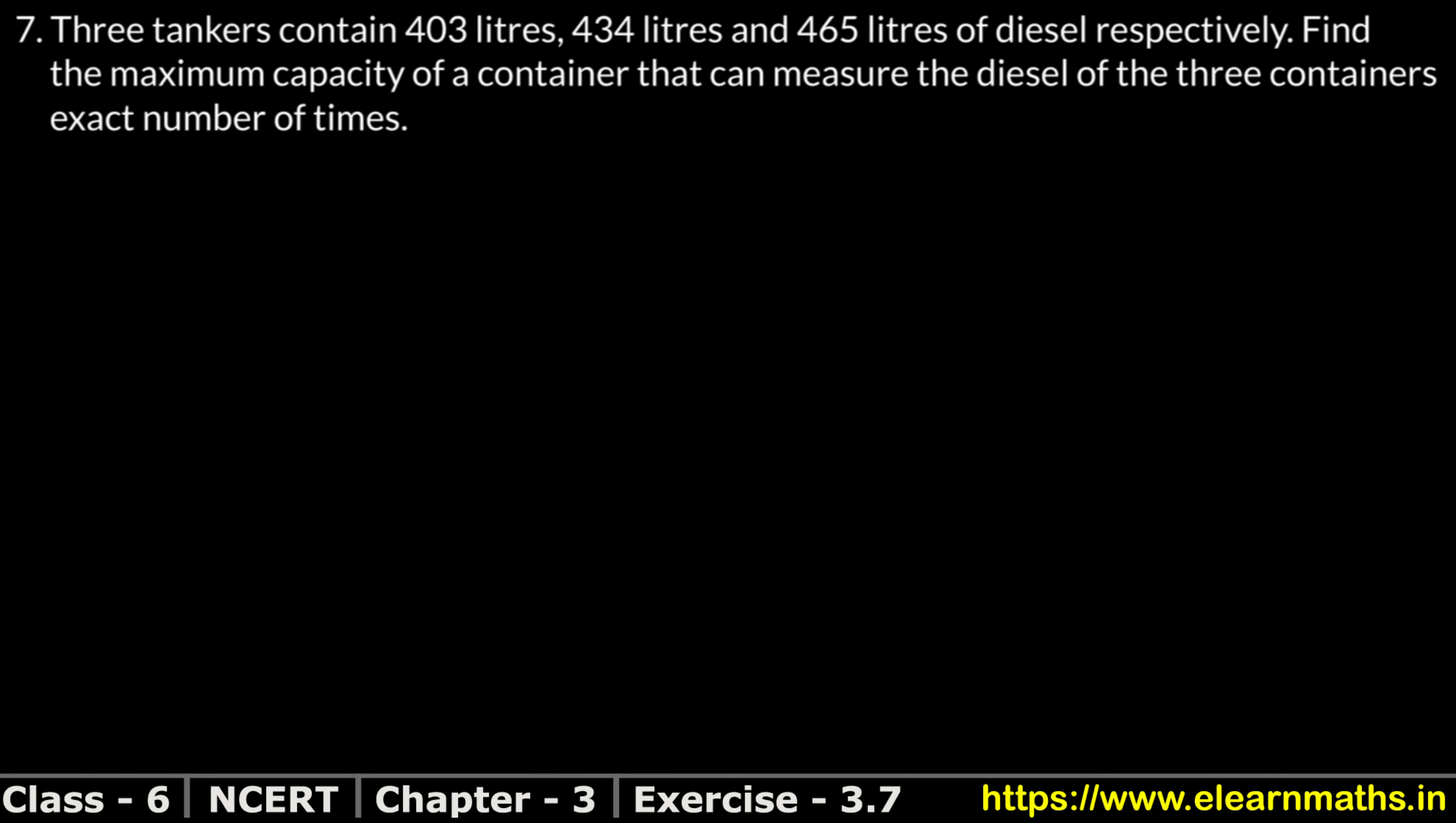Let's do question number 7 of exercise 3.7, that is playing with numbers. Question number 7 is: 3 tankers contain 403 liters, 434 liters and 465 liters of diesel respectively. Find the maximum capacity that can measure the diesel of 3 containers exact number of times.